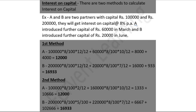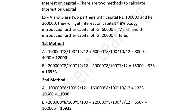Example: A and B are two partners with capital of rupees one lakh and two lakh. They will get interest on capital at the rate of eight percent per annum. A introduces further capital of rupees sixty thousand in March, and B introduces further capital of rupees twenty thousand in June. The rate of interest on capital is eight percent per annum. We will consider that month and year.